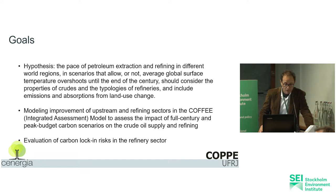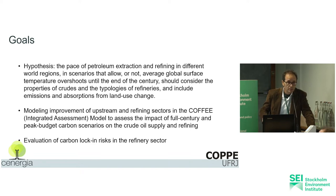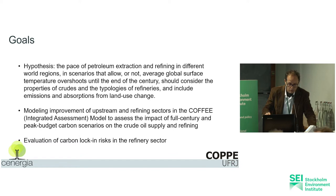Our major hypothesis is to show that we have to represent the oil quality and the typology of refineries in order to have a better picture of stranded assets. To prove this hypothesis, we have run our global integrated assessment model. The name of this model is COFI — a partial equilibrium integrated model that runs both the food system and the energy system for 18 regions in the world.